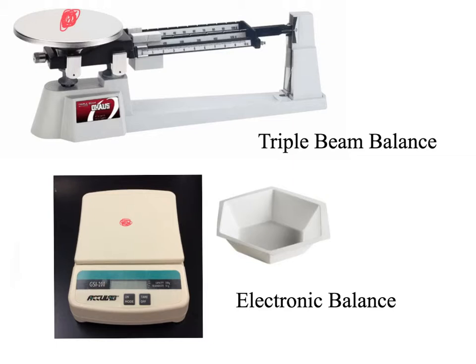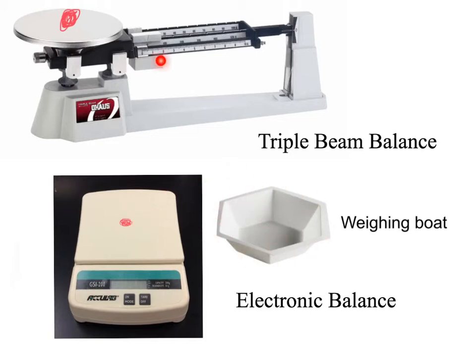The last piece of equipment on this slide is called a weighing boat. Imagine if you're trying to determine the mass of a liquid, a chemical powder, or something that might contaminate the balance — like an organ from an organism you're dissecting. You wouldn't want to put those things directly on the balance because they could damage it. So you put the weighing boat on the balance first, then put the item in the weighing boat, and you can determine its mass without messing up the balance.